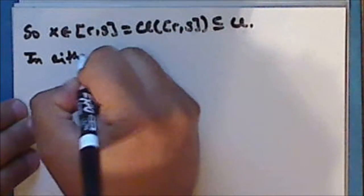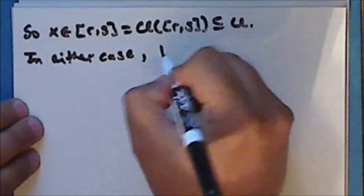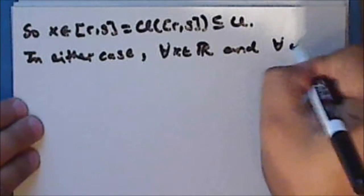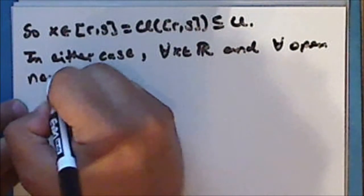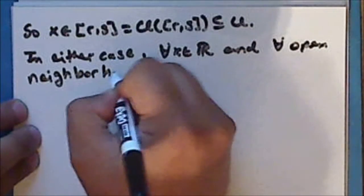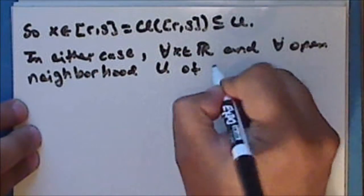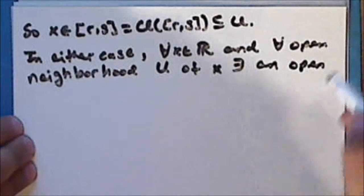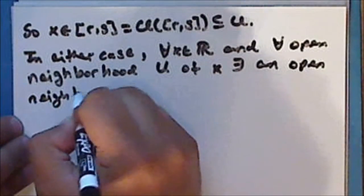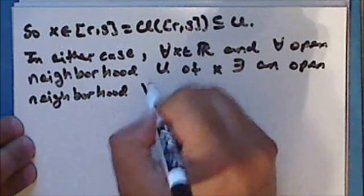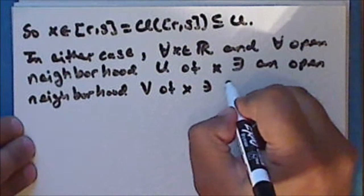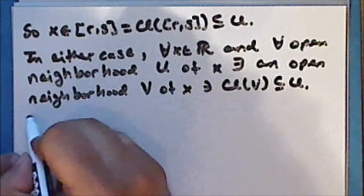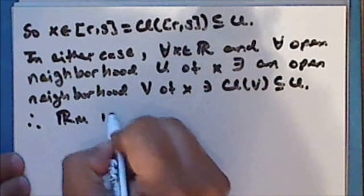So, in either case, for every real number x and for every open neighborhood u of x, there exists an open neighborhood v of x such that the closure of v is contained in u. And therefore, the Michael line is regular.